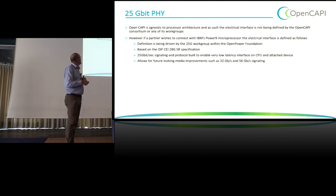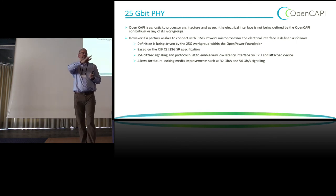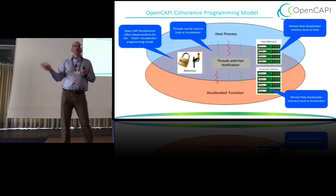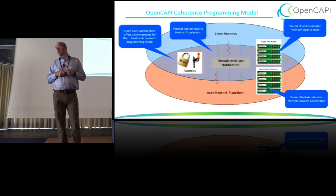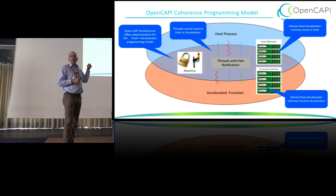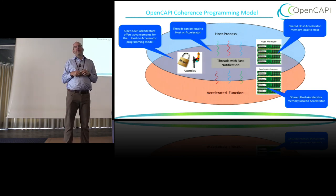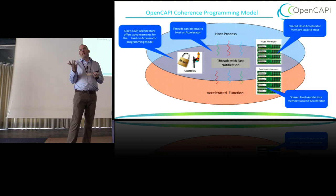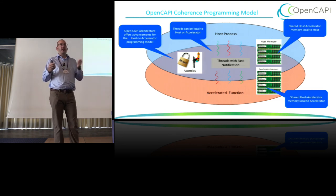The 25 Gbps PHY is a good starting point — unlike DDR memory which is on its last legs. We have sight lines to 32 and 56 Gbps off the same differential signaling, similar to an Ethernet standard. Every device vendor we've talked to — about ten different devices — has been able to run this 25 Gbps PHY. It's a very standard 25 Gbps thing, nothing particularly special about it.